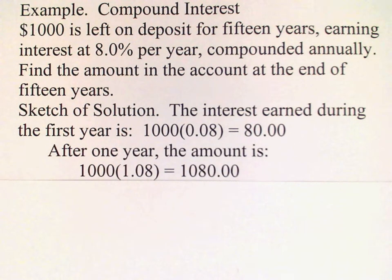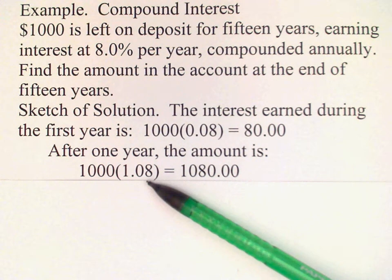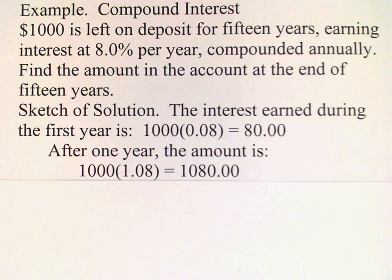And that gives us one thousand eighty as the balance to start the second year. So essentially what we've done is we've multiplied the principal by 1.08, or one plus the interest rate.